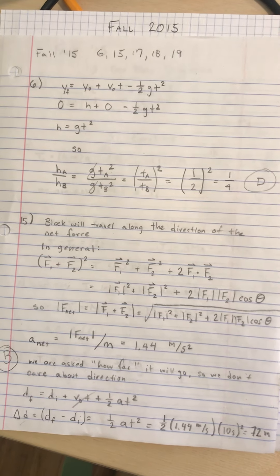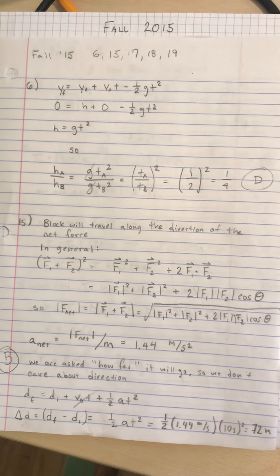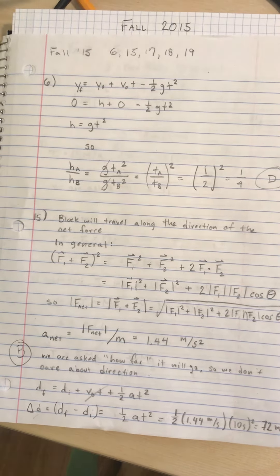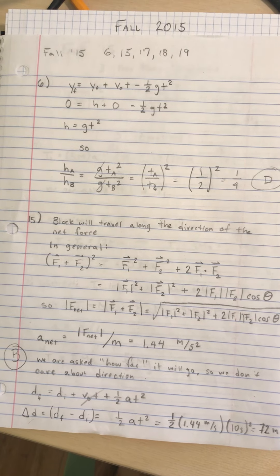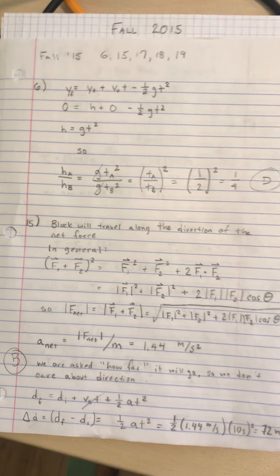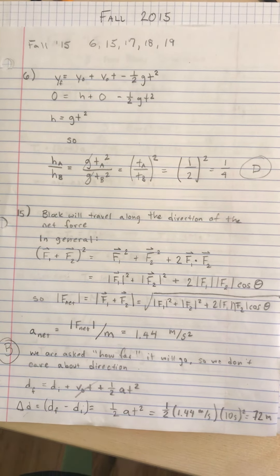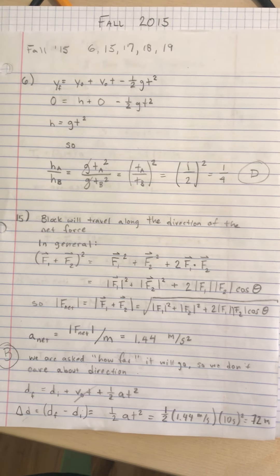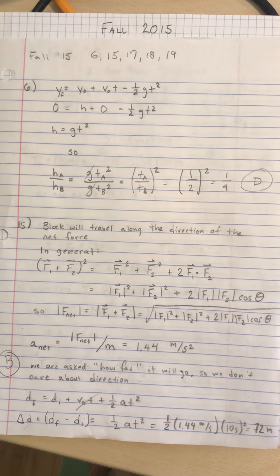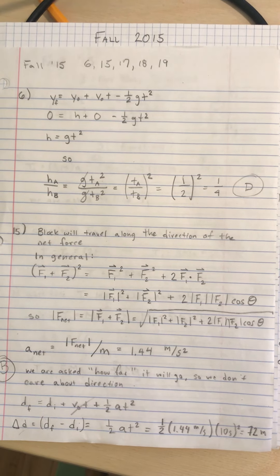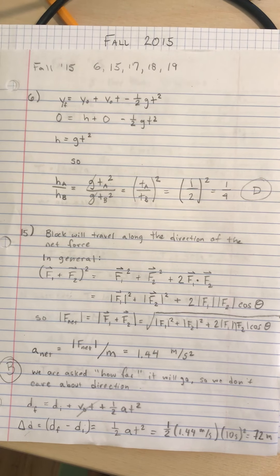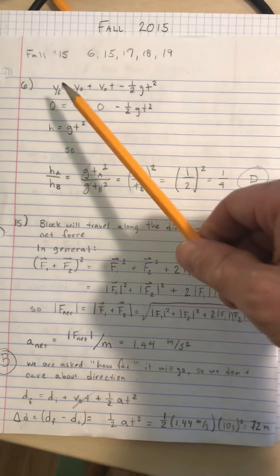This is the solution to Fall 2015 problem number six. Two objects are dropped from some unknown height for each of them, and one object takes twice as long to fall. They have no initial velocity, and we're asked how much higher B is from A, or rather what is the ratio of height A to height B.